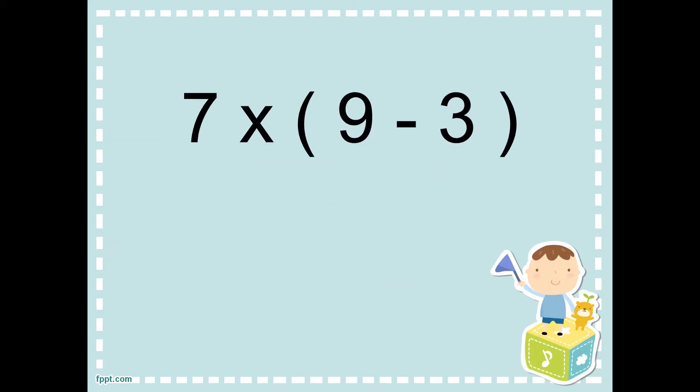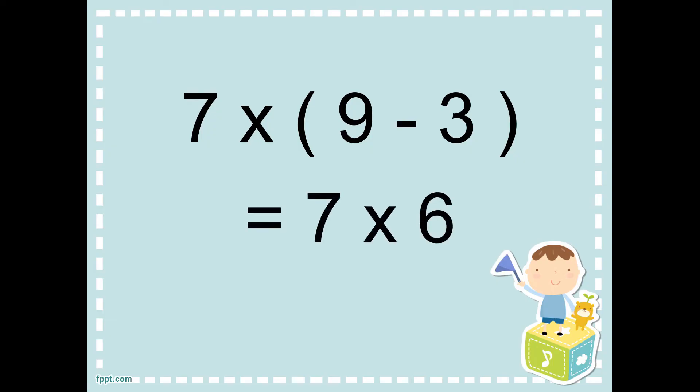Next. Seven times, open parentheses, nine minus three, close parentheses. By this time, we will use the PEMDAS rule since we have parentheses. Even though we have a multiplication sign, we have parentheses, so we will perform the subtraction first. What happens to seven? We will just copy seven times. Nine minus three equals six. So, seven times six. Seven times six equals forty-two.